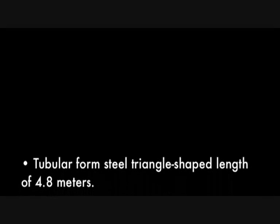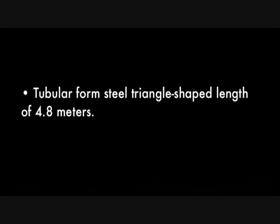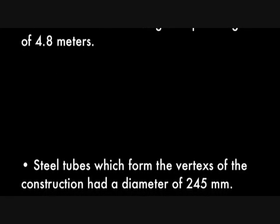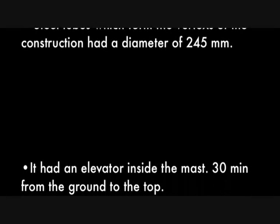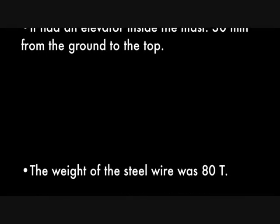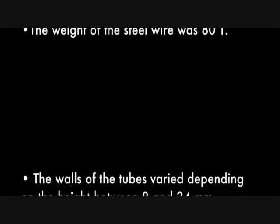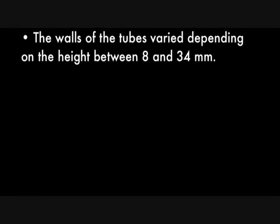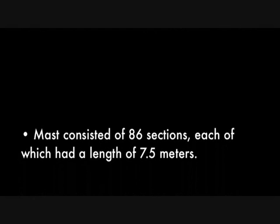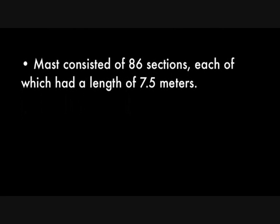Looking at some technical specifications: it was a tubular-formed steel triangle-shaped structure with side lengths of 4.8 meters. The steel tubes forming the vertices had a diameter of 245 millimeters. It had an elevator inside the mast which took 30 minutes to reach the top. The total weight of the steel wires was 80 tons. The walls of the tubes varied from 8 to 34 millimeters depending on the height. The mast was formed by 86 sections, each with a length of 7.5 meters.